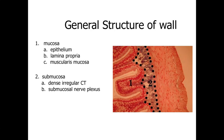If we take a look at the general wall structure of the Digestive Tract, what we're looking at is a tube-like organ with layers found consistently along its length. On the image, the space to the left is the lumen — where the materials being digested and absorbed pass through — and to the outside on the right is the body cavity.